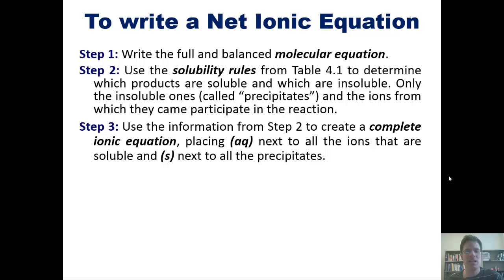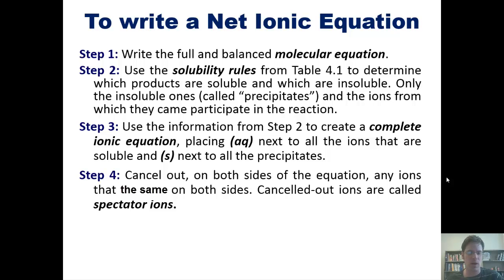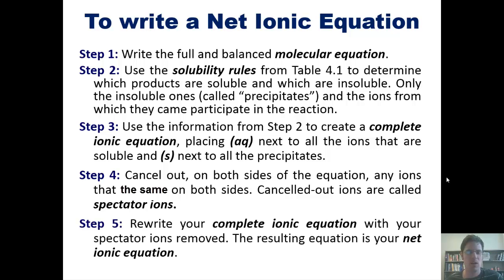Step 3: Use the information from Step 2 to create a complete ionic equation, which I just showed you for this lead iodide example a slide or two ago, placing (aq) next to all the ions that are soluble and (s) next to all of the precipitates. Step 4: Cancel out on both sides of the equation any ions that are (aq) on both sides, that are exactly the same on both sides. Canceled out ions are called spectator ions. And Step 5: Rewrite your complete ionic equation with your spectator ions removed. The resulting equation now shown is the net ionic equation.